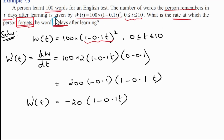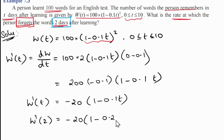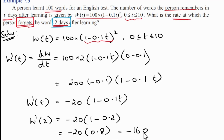To find the rate of change, we compute w'(2). After 2 days, t = 2. So w'(2) = -20 × (1 - 0.1 × 2) = -20 × (1 - 0.2) = -20 × 0.8 = -16.